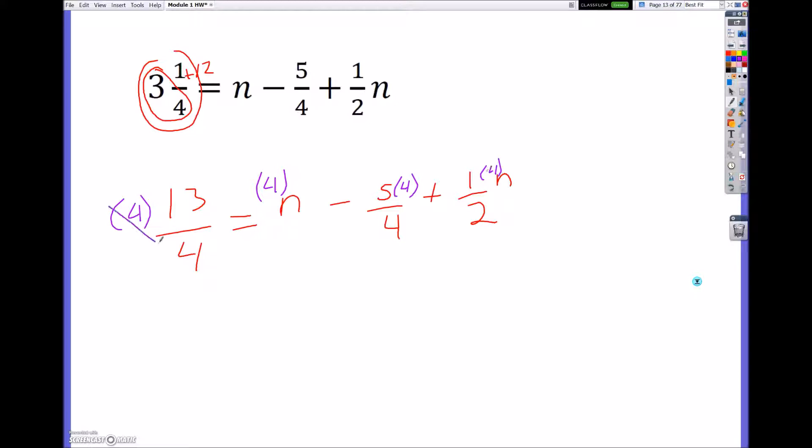So when I do that, these are going to cancel. I'm going to be left with 13 equals 4n minus, these cancel, 5 plus, now 4 over 2, 4 divided by 2 is 2. So I'm going to be left with 1n times 2. And that would have cancelled, which would give me 2n.